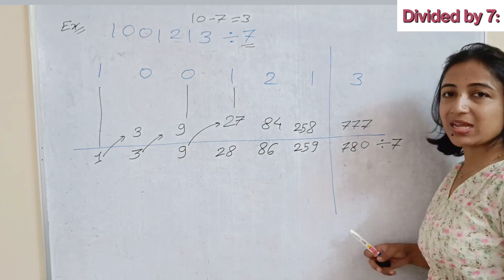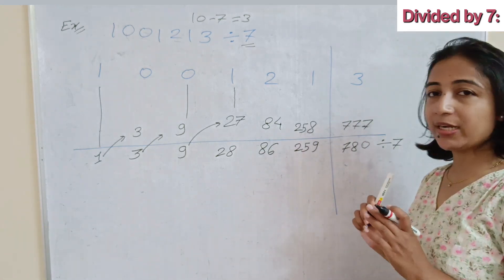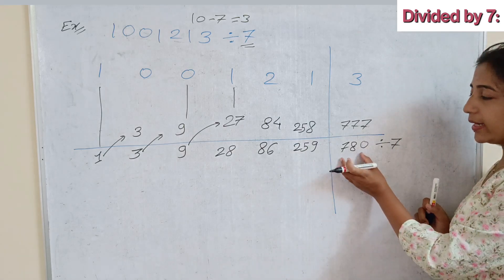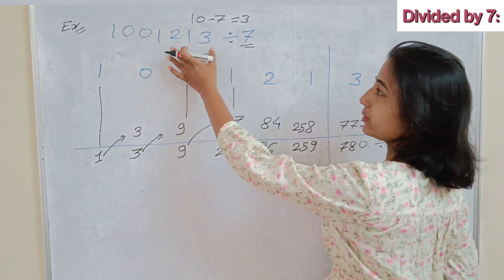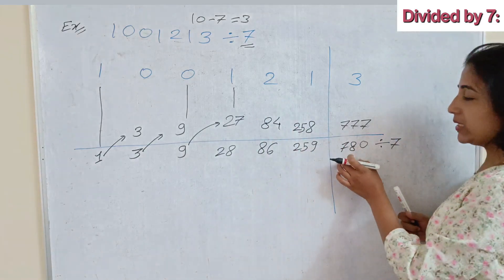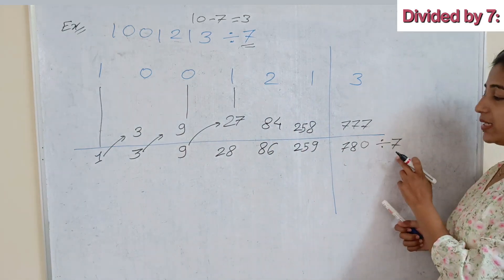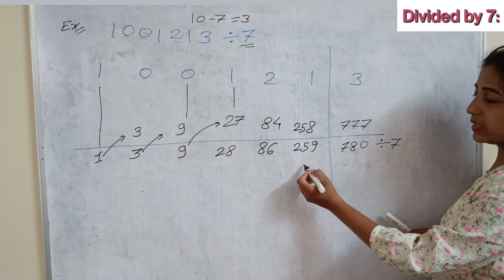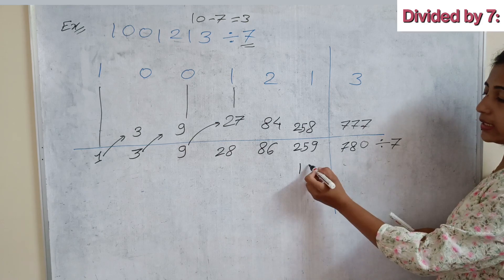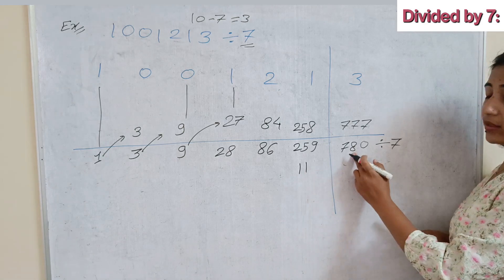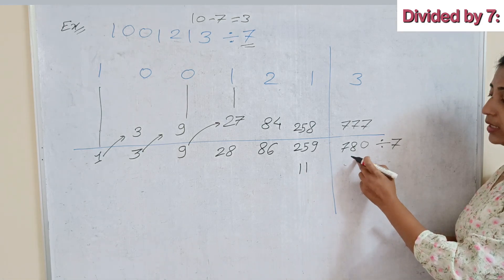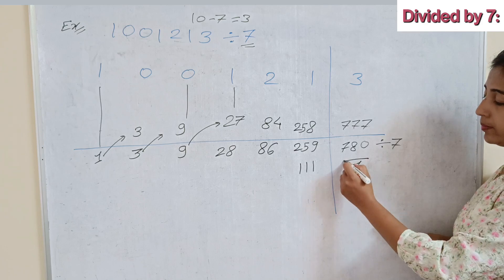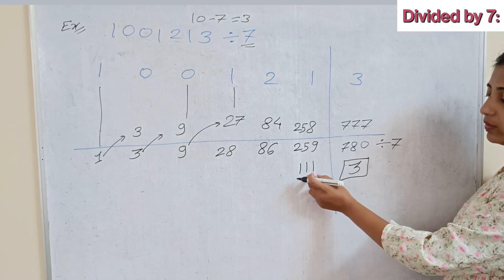Instead of applying the process continuously, directly divide 780 by 7. As compared to the 7-digit number, it is very easy to divide this 3-digit number by 7. 7 goes into 7 once, bringing down 8: 7 into 10 once, remainder 3; 7 into 30 four times — so the quotient is 111 with remainder 3. Wait, working through: 780 ÷ 7 gives quotient 111 and remainder 3.